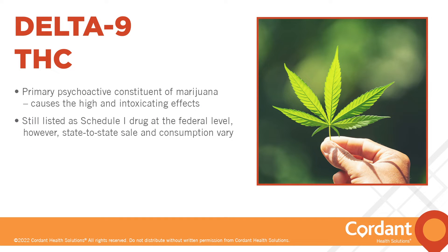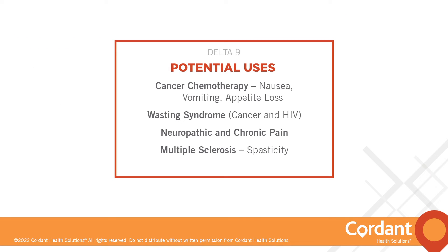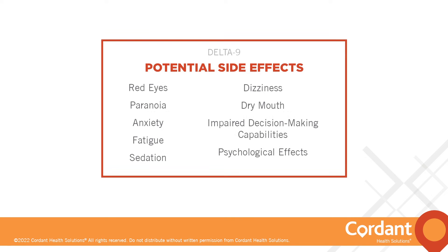Delta-9 is the most well-known type of THC and is known as the psychoactive cannabinoid found in high abundance within the marijuana plant — it's the part that causes the intended high and intoxicating effects. Potential uses include cancer chemotherapy to alleviate side effects such as nausea, vomiting, and appetite loss, the wasting syndrome associated with cancer and HIV, neuropathic and chronic pain, and multiple sclerosis spasticity. Potential side effects include red eyes, paranoia, anxiety, fatigue, sedation, dizziness, dry mouth, impaired decision-making, and other psychological effects.